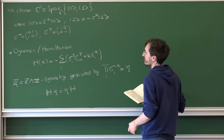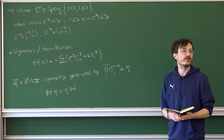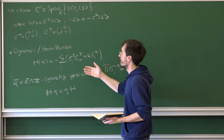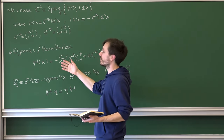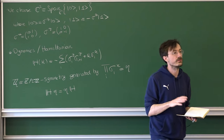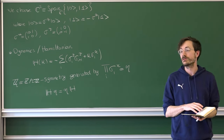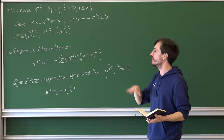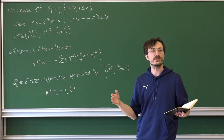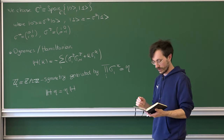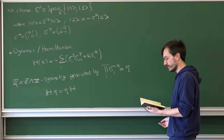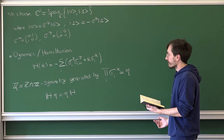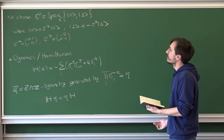The fact that we have this ℤ₂ symmetry already gives us some information. In particular, it means the Hilbert space and the Hamiltonian decompose into two blocks labeled by the two irreps of the group ℤ₂ — an even and an odd sector.